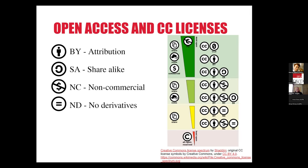Those six different licenses are made up of various combinations of four different conditions or parameters. BY means attribution and requires the creator to be credited anytime the work is used — this is a requirement in all CC licenses. SA means share alike and requires that if you modify or adapt the work, you must also apply the share alike license to your resulting work, which is intended to perpetuate openness. NC means non-commercial and prohibits any commercial use of the work. ND means no derivatives and prohibits making any adaptations to the work. For example, you can see CC BY-NC-SA: attribution, non-commercial, share alike.